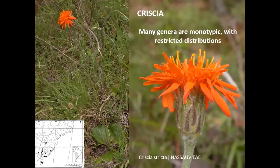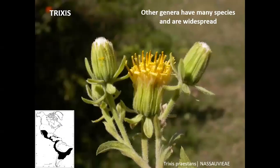As previously mentioned, there are many monotypic genera in the tribe, such as Criscia, and in general these monotypic genera have very restricted distributions. On the other hand, there are genera with many species that are widespread — for example, the genus Trixis, which has a neotropical distribution.